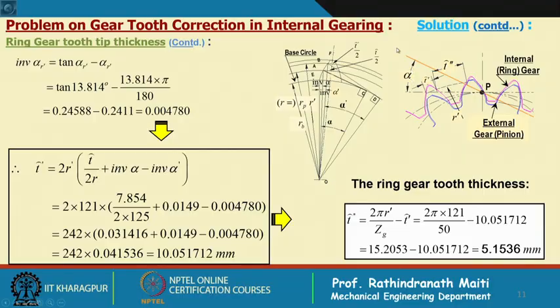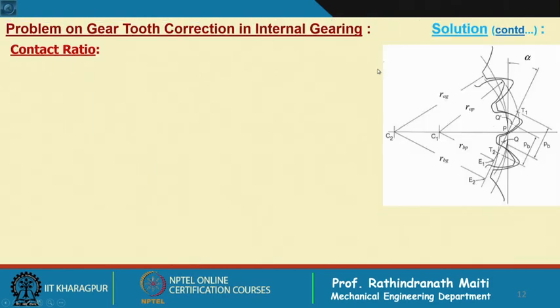The tooth tip thickness of the internal ring gear is: T_tip_g = 2π × r_tip_g / Zg − T' = 2π × 121 / 50 − 10.051712 = 5.1536 millimeter. This is slightly higher than the corrected pinion tip thickness of 4.5 millimeter, confirming this gear set will work correctly. This demonstrates how to calculate tooth tip thickness for an internal gear.